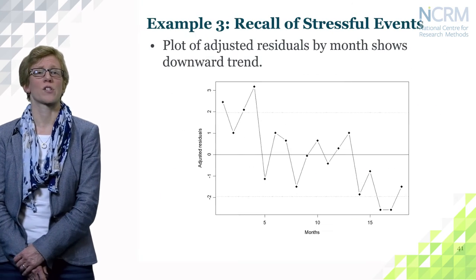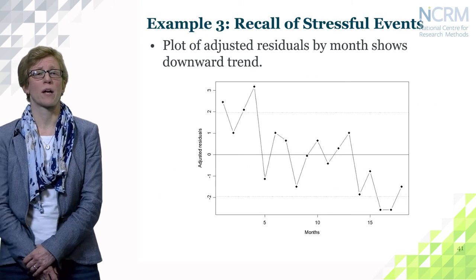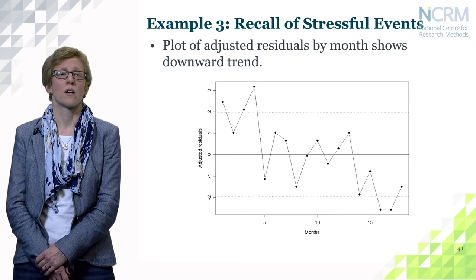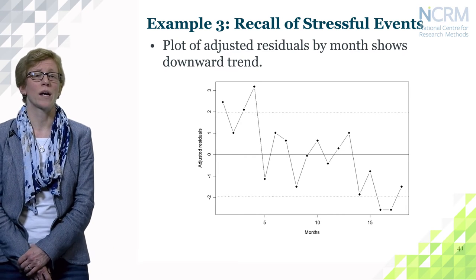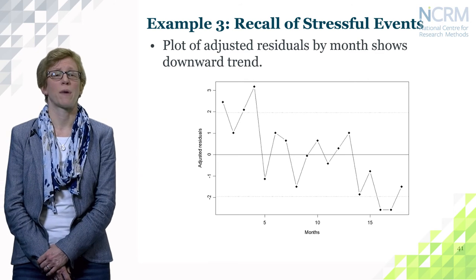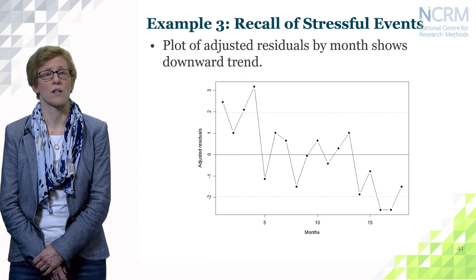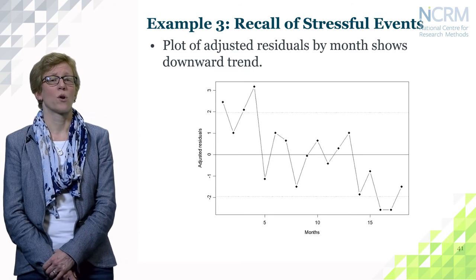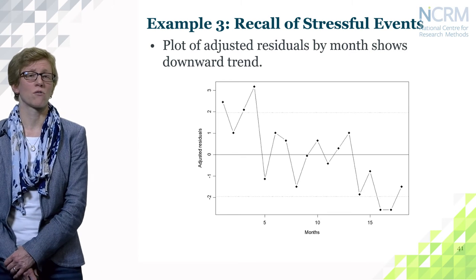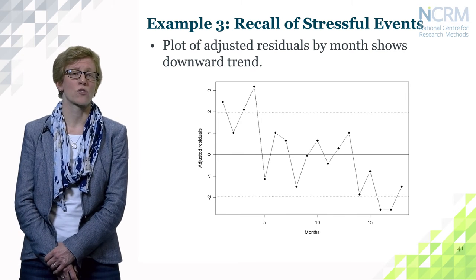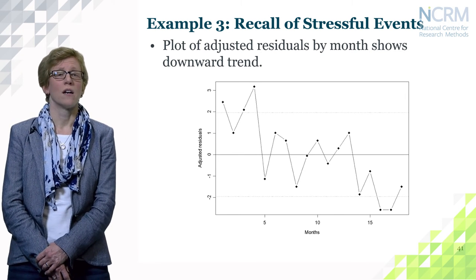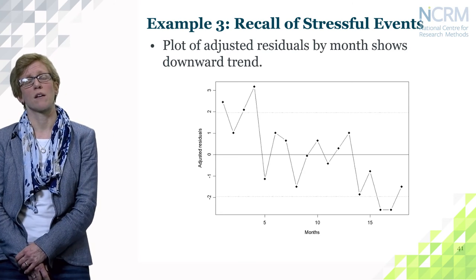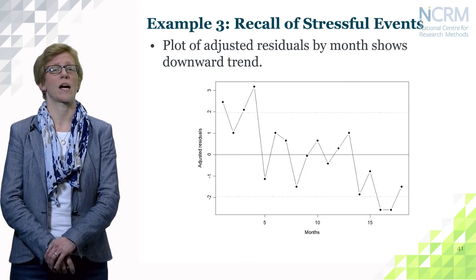Looking at the plot of adjusted residuals per month, we also see a downward trend. The adjusted residuals are on the y-axis and the months are on the x-axis. By plotting those adjusted residuals we can see there is a downward trend — it's not a random pattern — suggesting a time trend in the data.